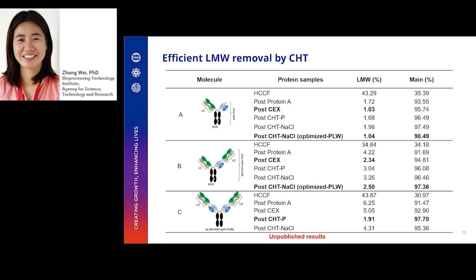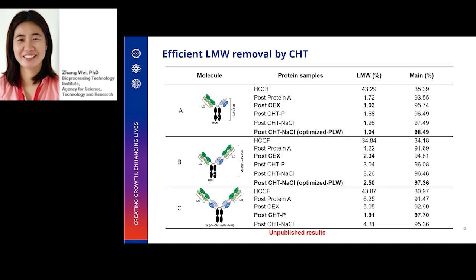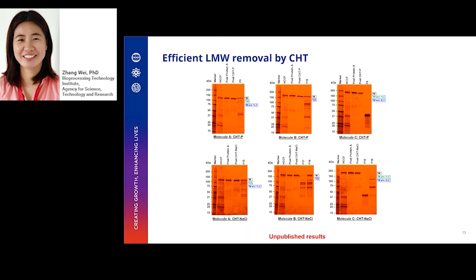Let's have a closer look at LMW removal by CHT. CHT was able to remove a variety of product-related impurities, including the NOB-NOB and HOH homodimers, and BsAb monomer losing one or two light chains.